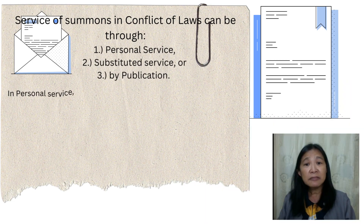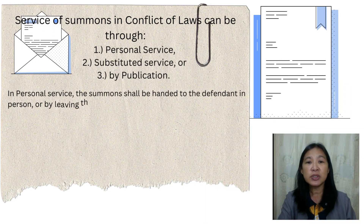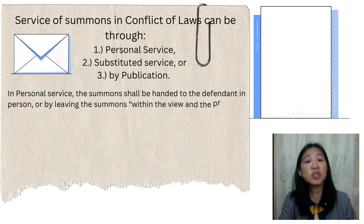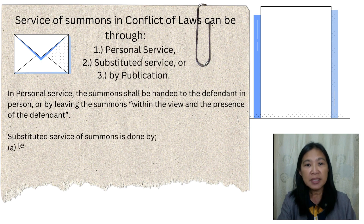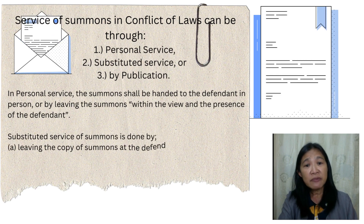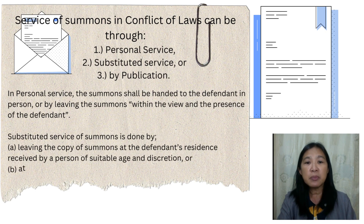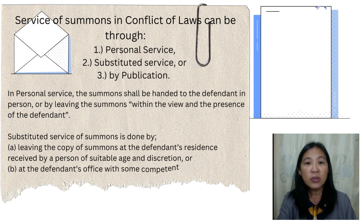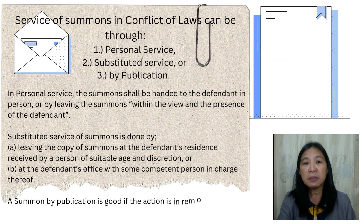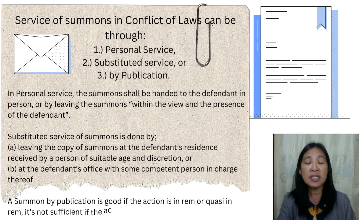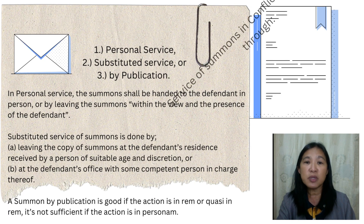Service of summons in conflict of laws can be through personal service, substituted service, or by publication. In personal service, the summons shall be handed to the defendant in person or by leaving the summons within the view and presence of the defendant. Substituted service of summons is done by leaving a copy of the summons at the defendant's residence, received by a person suitable of age and discretion, or at the defendant's office with some competent person in charge. A summons by publication is valid if the action is in rem or quasi-in rem, but is not sufficient if the action is in personam.